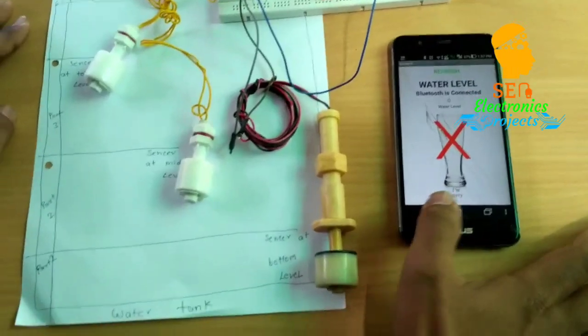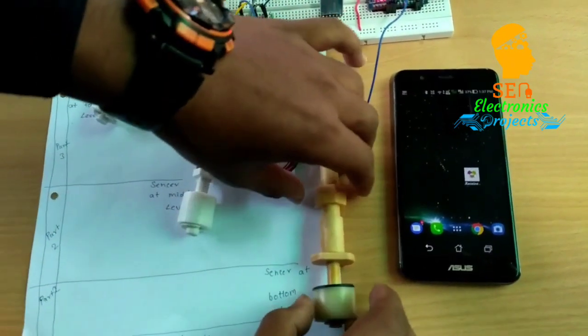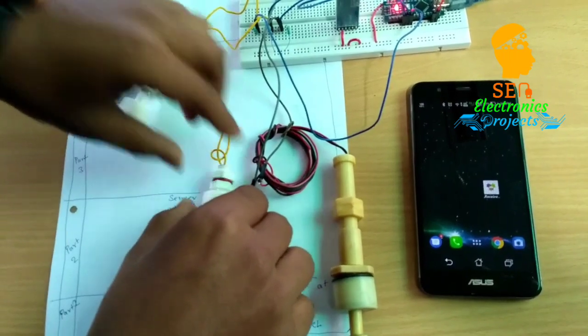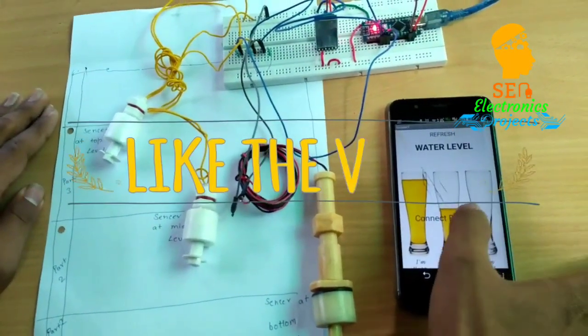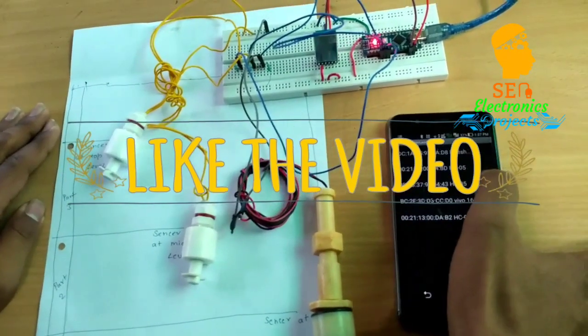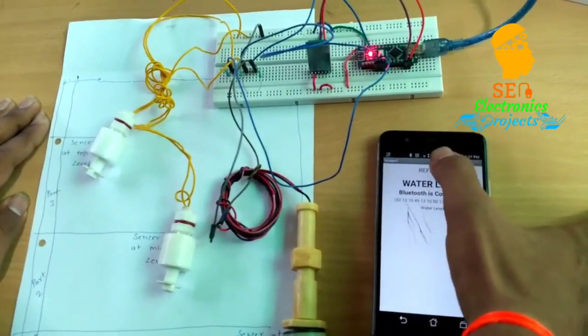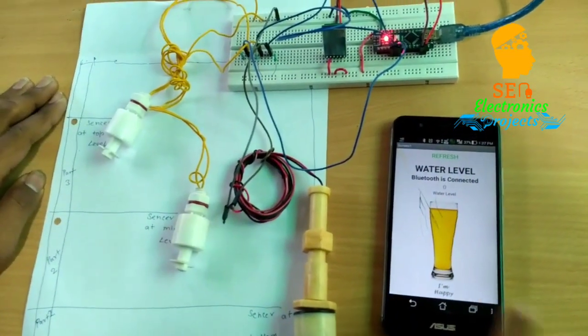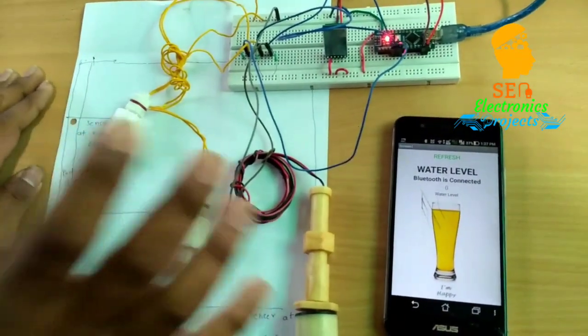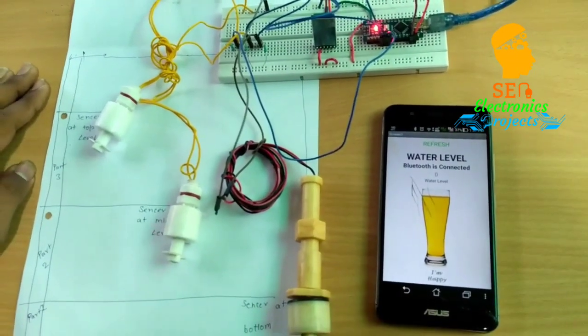Now we disconnect it. The water tank is again filling. The water tank is now fully filled. We connect the Bluetooth and now we refresh it. Water level is full. Now we are getting the correct reading from it.